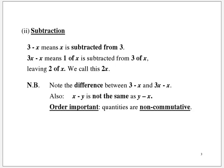Also, x minus y is not the same as y minus x. Clearly, the order is important. So we say quantities are non-commutative under subtraction. x minus y, not the same as y minus x, means they cannot be changed around.